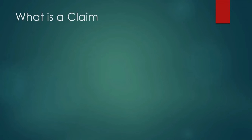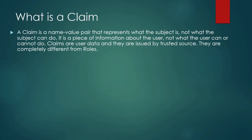The first thing you need to understand is what a claim is. A claim is a piece of information about the user, and most people define it as a name-value pair that represents what the subject is or what the subject can do. It is actually a piece of information about the user — not what the user can do or cannot do.